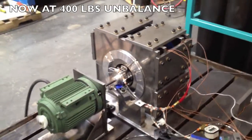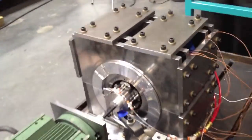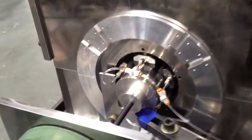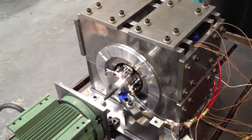Now we've been running this for two and a half hours at 2400 RPM. The unbalanced force is 400 pounds at that speed.